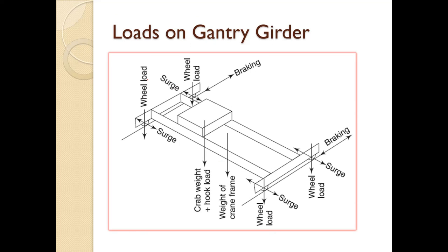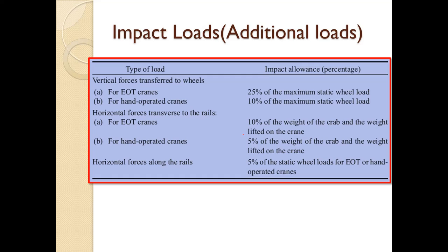The lateral loads are caused due to sudden stopping and starting of the crab, acting in the transverse direction. The longitudinal loads are caused due to stopping or starting of the crane girder and produce thrust along the rails. The lateral and longitudinal thrust are transferred at the rail level — remember that. Therefore the gantry girder is also subjected to bending moment due to these loads, and the stresses produced are more than those caused by gradually applied loads, covering forces from sudden braking, acceleration, retardation, vibration, and possible slips of slings.